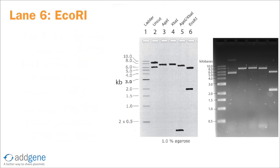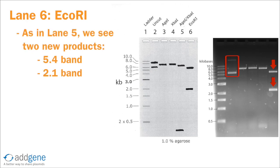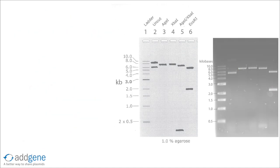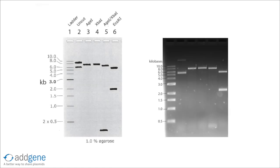Lane 6 is the EcoRI digest. Again, we see two new digestion products in this lane relative to the negative control lane. Notice we do not see any residual nicked or supercoiled bands, which indicates that the reaction was run to completion. Overall, our gel looks close to the expected results, and we don't see any bands that we can't explain. This indicates that the plasmid we've isolated is most likely the plasmid we think it is.